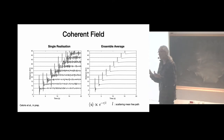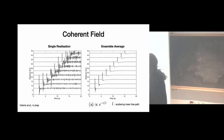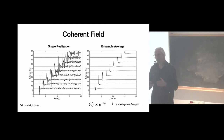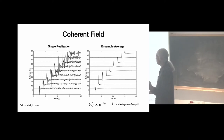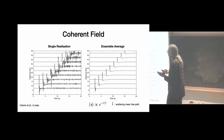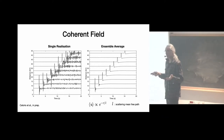The scattering mean free path characterizes the decay of the coherent part of the wave field. If the coherent field decays, energy has gone somewhere — it is in the coda. To access the coda we cannot just average the field, because averaging removes all coda arrivals (they are phase-shifted from one realization to the other). We have to go to the intensity instead.